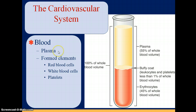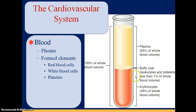Plasma is 90 percent water, and blood is made up of that plus the solid elements: red blood cells, white blood cells, and platelets — or erythrocytes, leukocytes, and thrombocytes. Plasma ends up to be about 55 percent of the whole blood volume, erythrocytes are 45 percent, and leukocytes and platelets are less than one percent.